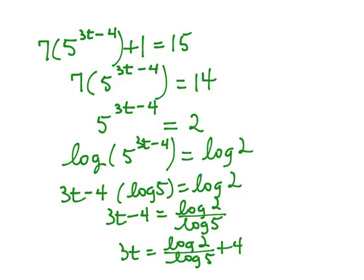And so to get our final answer, to get what t is, we'll have to divide both sides by 3. And when we divide both sides by 3 using our calculator, we come up with the answer 1.477.